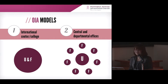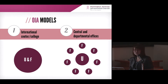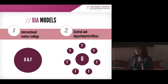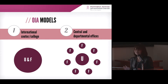The structure of OIA in a university can be roughly divided into two models. In the first model, we have the International College or Center that does the work of both university level and faculty level. For the second model, it refers to a central and departmental or faculty office that does the work separately.